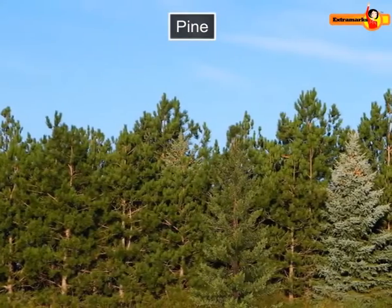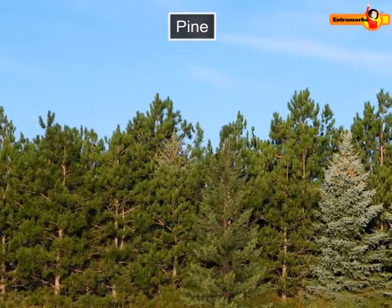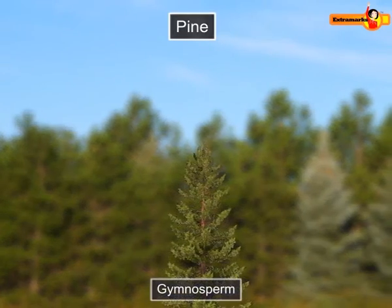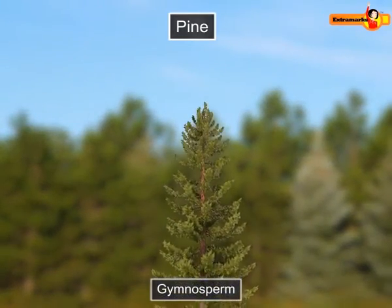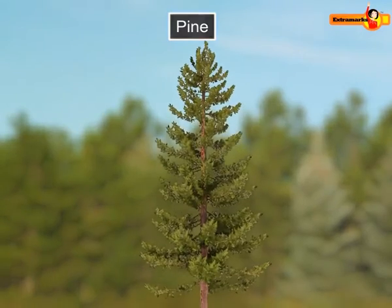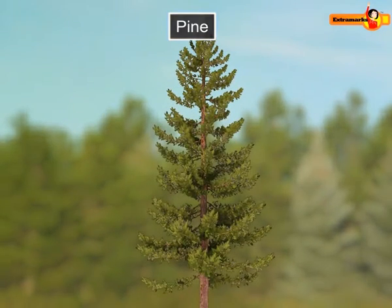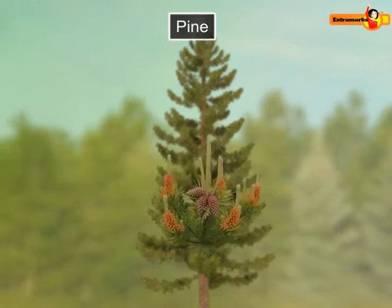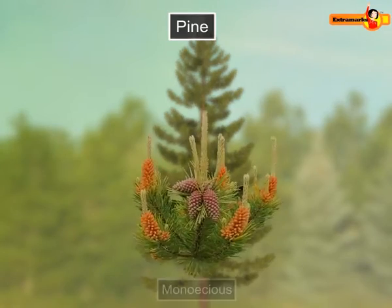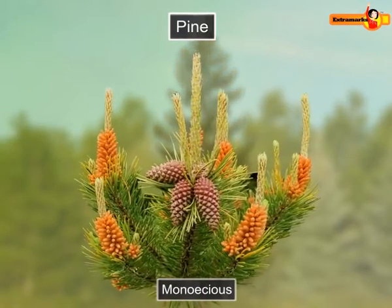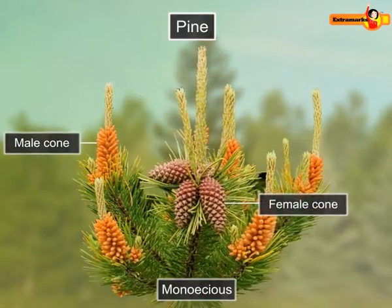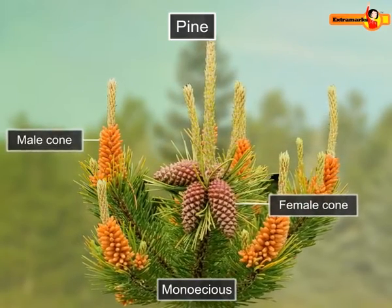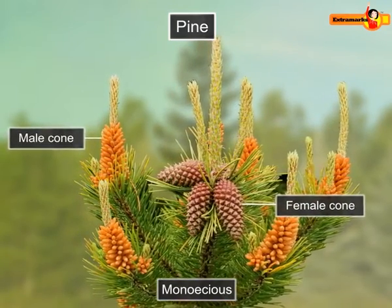Pinus is the most common and widely distributed genus of the gymnosperms. Their mode of reproduction is mainly sexual. The plant is monoecious, that is, male and female cones or strobili develop on the same plant but on different branches.